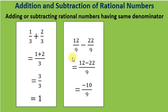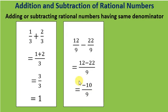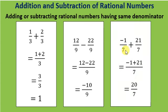Let us take another example: 12 by 9 minus 22 by 9. When you subtract rational numbers with the same denominator, the rule is the same — subtract only the numerators and take the common denominator. So it is 12 minus 22 divided by 9, which equals minus 10 divided by 9. One more example: minus 1 by 7 plus 21 by 7. Both denominators are the same, so we add the numerators: minus 1 plus 21 divided by 7, which equals 20 divided by 7.